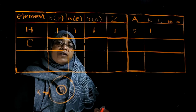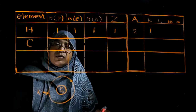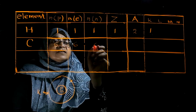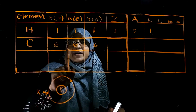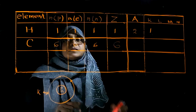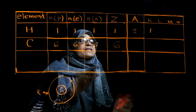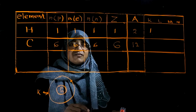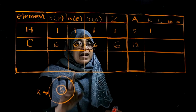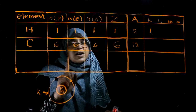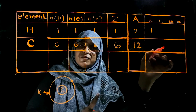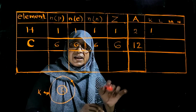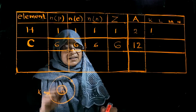Now let us go to the next example: carbon. The symbol of carbon is C. The number of protons in carbon is 6, the number of electrons is 6, and the number of neutrons is 6. The atomic number Z is 6. The mass number is 6 plus 6 equals 12. Now we represent the electronic configuration.